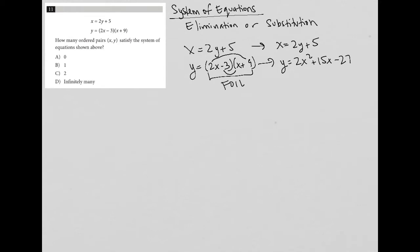So the question says, how many ordered pairs (x, y) satisfy the system of equations shown above? Well, let's think about what that means. So an ordered pair, that means I'm going to solve this either through elimination or substitution.